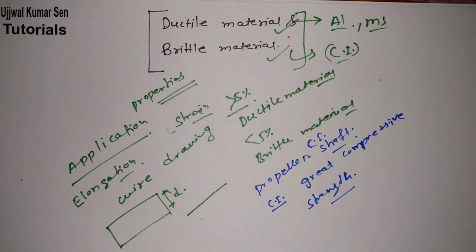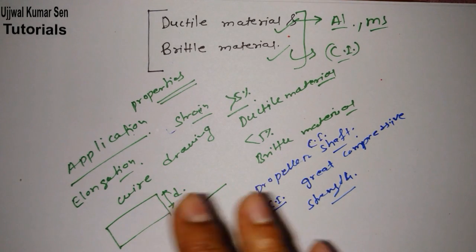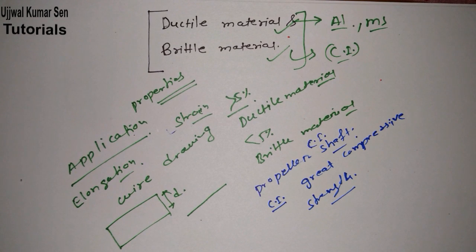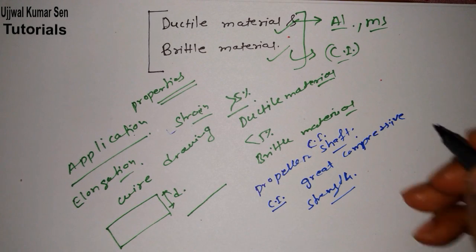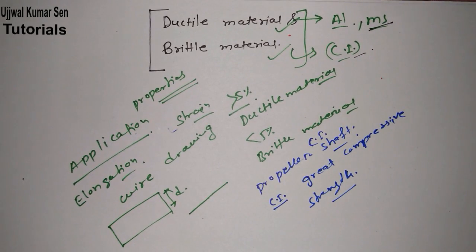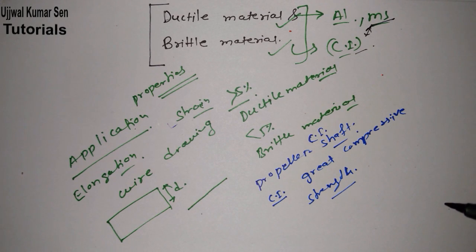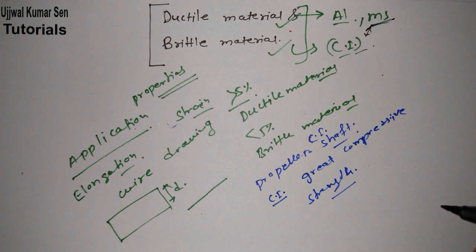The brittle material is having very good compressive strength. So now you know what is brittle material, what is ductile material, their applications, and their examples. Now the most important thing — how these two materials, suppose cast iron and mild steel, will behave in a stress and strain diagram. If we draw a stress-strain diagram, how would these materials' diagrams look?